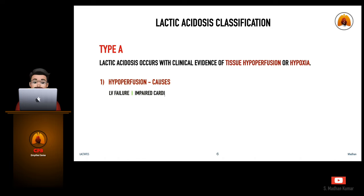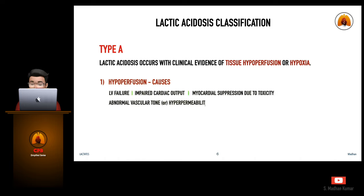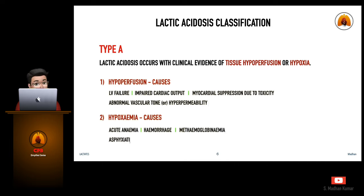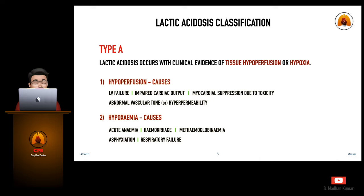Type A lactic acidosis is due to hypoperfusion and hypoxia, which occurs when an oxygen consumption-delivery mismatch occurs with resulting anaerobic glycolysis. Causes for hypoperfusion include LV failure, impaired cardiac output, myocardial suppression due to toxicity, and abnormal vascular tone or hyperpermeability. Causes for hypoxemia include acute anemia, hemorrhage, methemoglobinemia, asphyxiation, and respiratory failure.